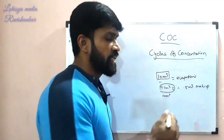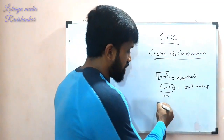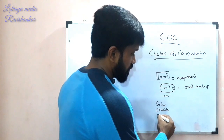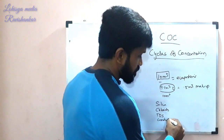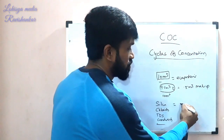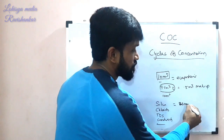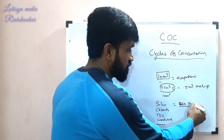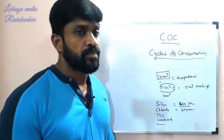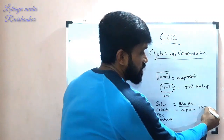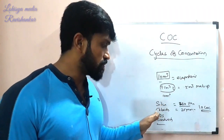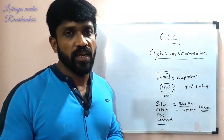The key parameters to monitor are: silica value, chlorides value, TDS, and conductivity. For example, if silica in the circulation water is 250 ppm and in the makeup water it is 25 ppm, then that gives you 10 COC — 10 Cycles of Concentration. Maintaining silica, chlorides, TDS, and conductivity allows you to maintain the cooling tower.